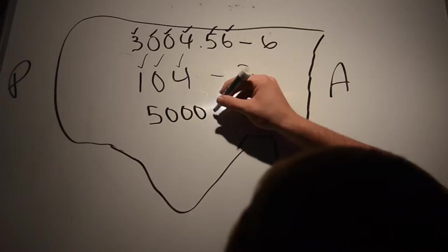Or take a number like 5,000. There's no decimal, so you start from the right, and all zeros don't count, so you only have one.